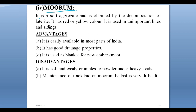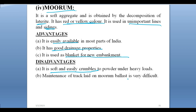Murum. It is a soft aggregate obtained by the decomposition of laterite. It has red or yellow color and is used in unimportant lines and sidings. Advantages: It is easily available in most parts of India and has good drainage properties. It is used as a blanket for new embankments. Disadvantages: It is soft and easily crumbles to powder under heavy loads. Maintenance of track laid on murum ballast is very difficult.